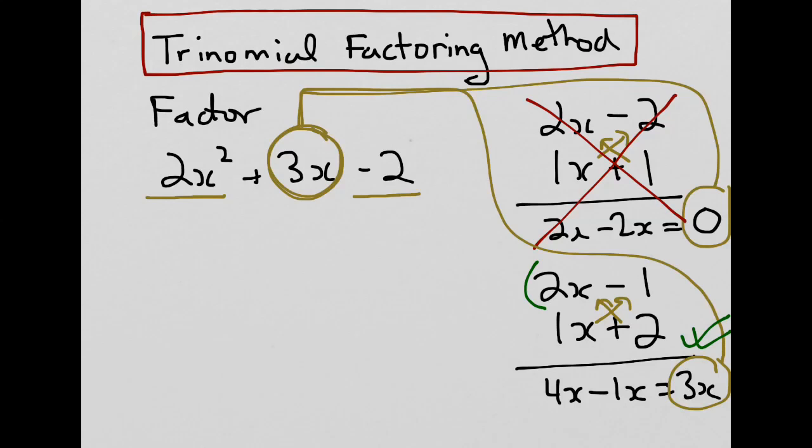And in our case, the factors then would be this term and this term. Or, (2x - 1) times (x + 2).